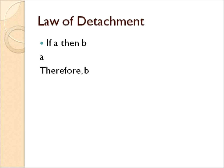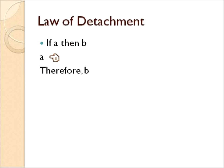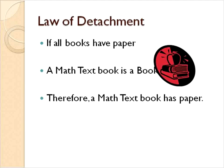The law of detachment is a little bit different. This one says: if A then B, and then you state A, therefore B is true. For example: if all books have paper, and a math textbook is a book, therefore a math textbook has paper. So if something is true — books have paper — and this is a book, therefore it has paper. You're basically saying if A then B, you state A again, therefore B.